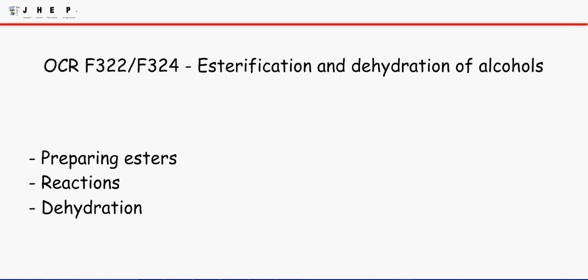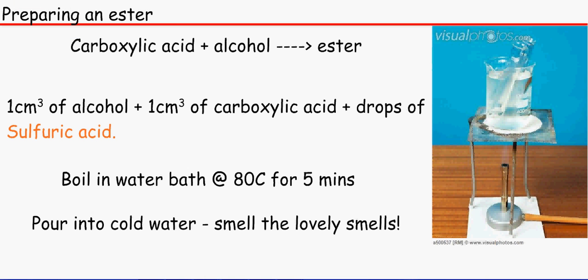The first thing that we need to remember is that to make an ester we need a carboxylic acid, which we can get from the reflux of a primary alcohol, and we need an alcohol. We make this compound that we call an ester.